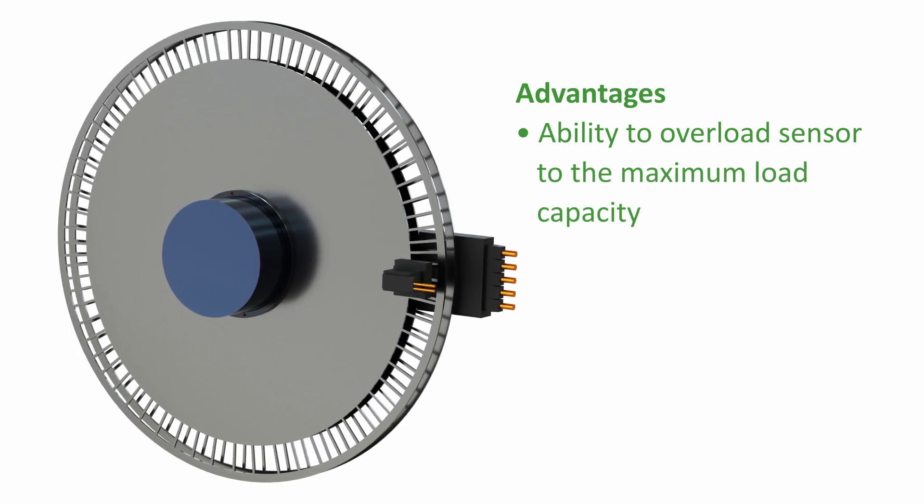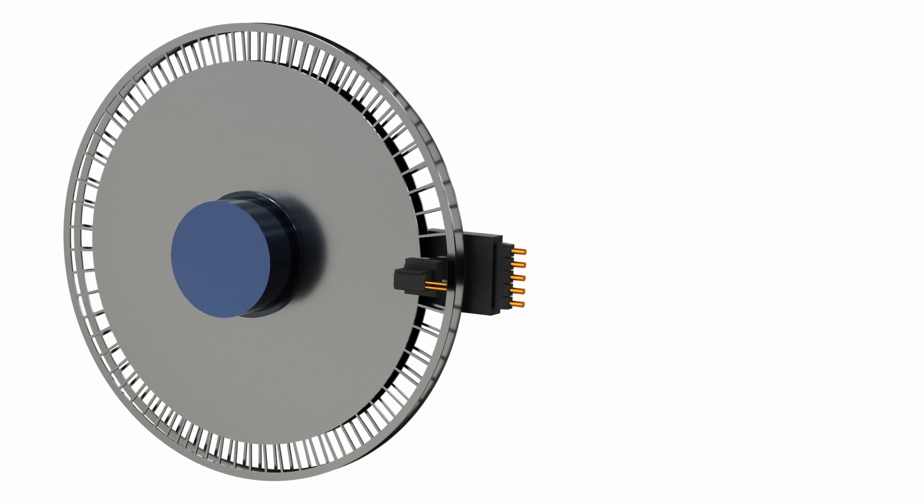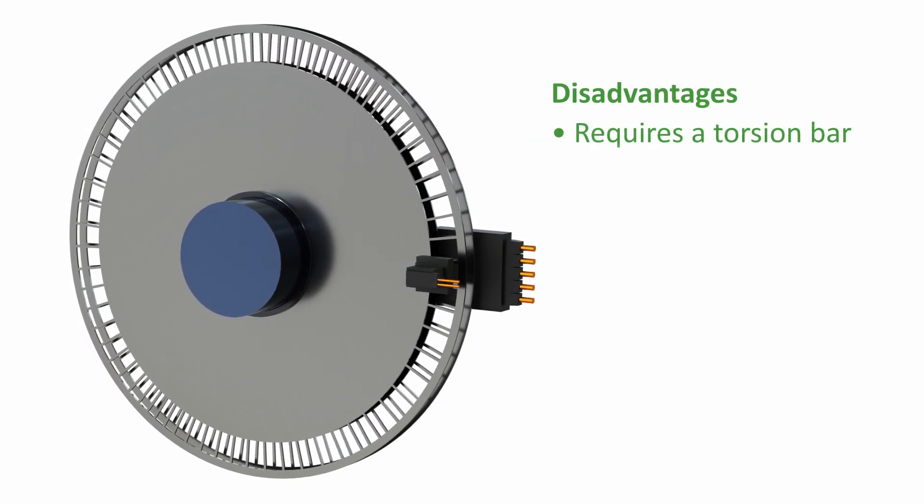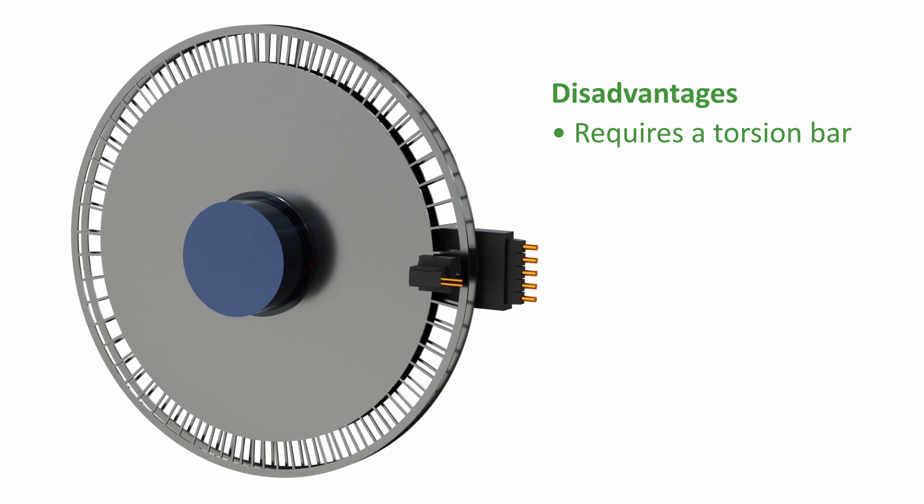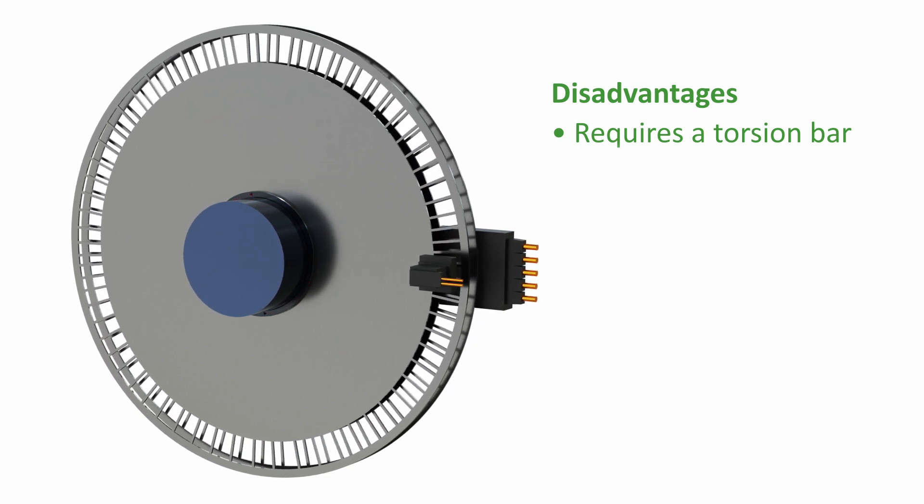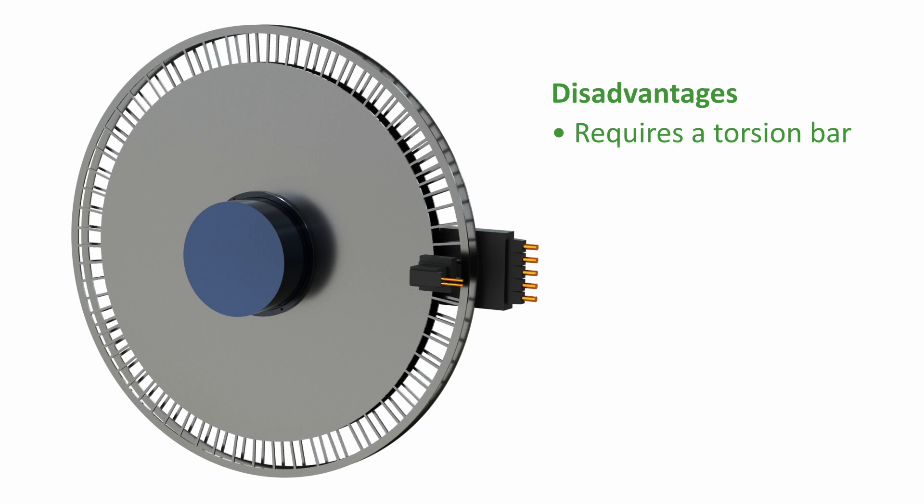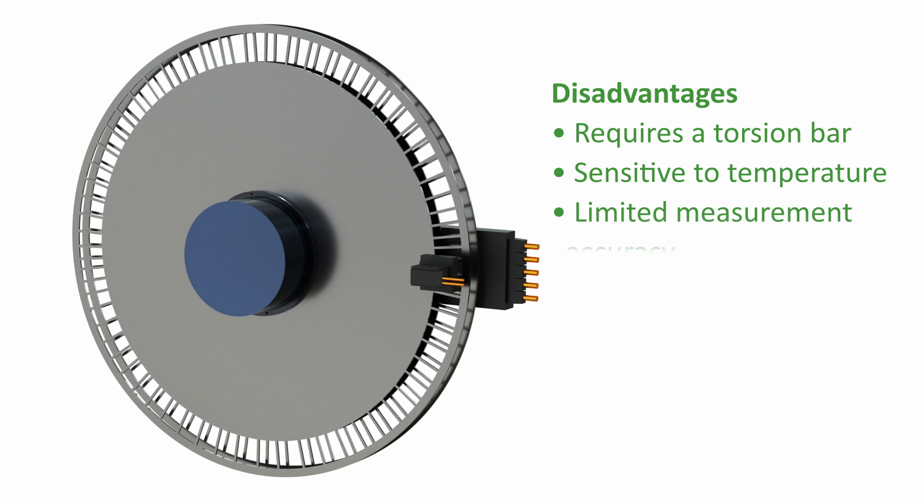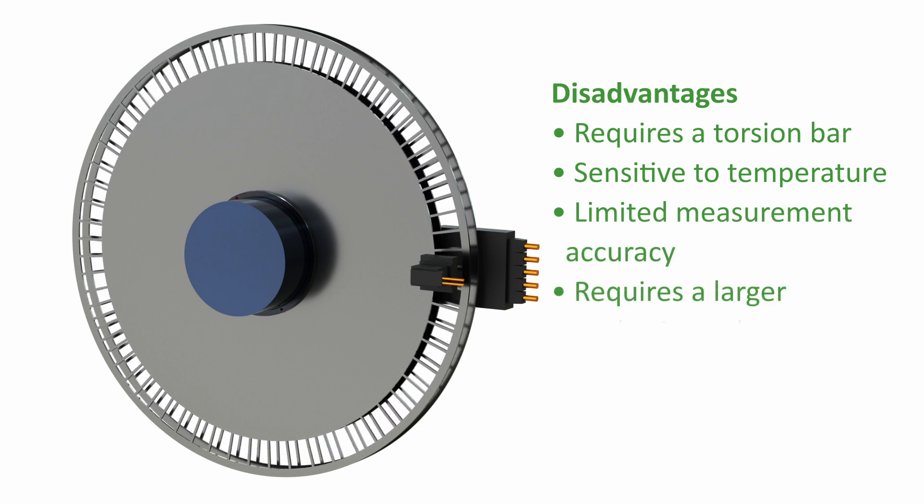Disadvantages of this method include: it requires a reduced diameter section of the shaft known as a torsion bar to enhance the twist angle, which can have a negative effect on the mechanical stability of the system. It is sensitive to temperature, has limited measurement accuracy, and requires a larger packaging volume due to the need to measure shaft twist along the torsion bar length.